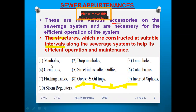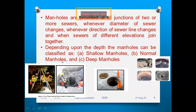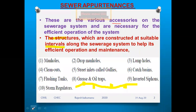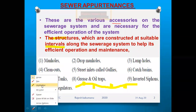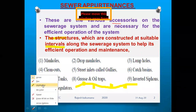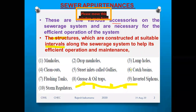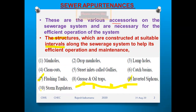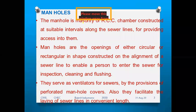The various appurtenances we will discuss in this class are: manholes, drop manholes, lamp holes, clean outs, street inlets (called gullies), catch basins, flushing tanks, wall traps, inverted siphons, and storm ligatures. These are the various appurtenances used in the design of the sewer system.